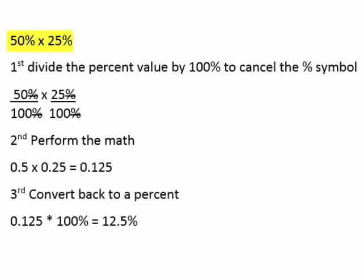Two percent values can also be multiplied: 50% times 25%, or 50% of 25%. First, we'll divide the percent values by 100 to cancel out the percent symbol, then perform the math.